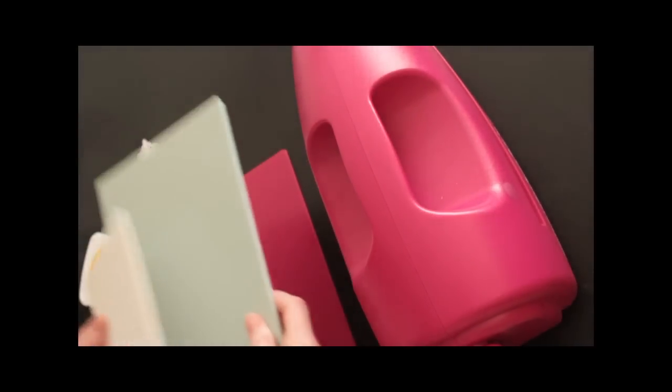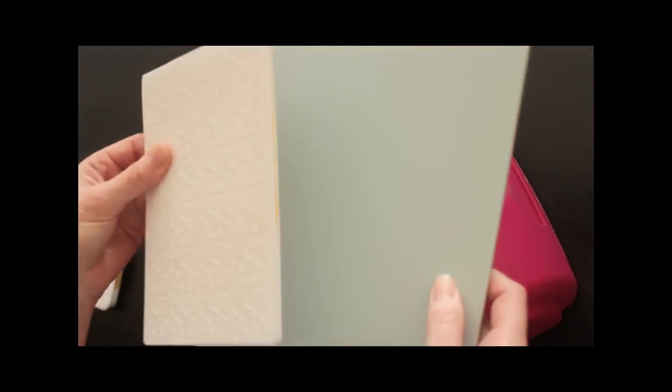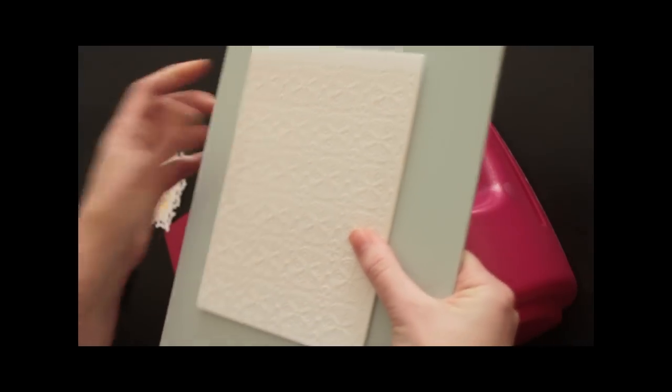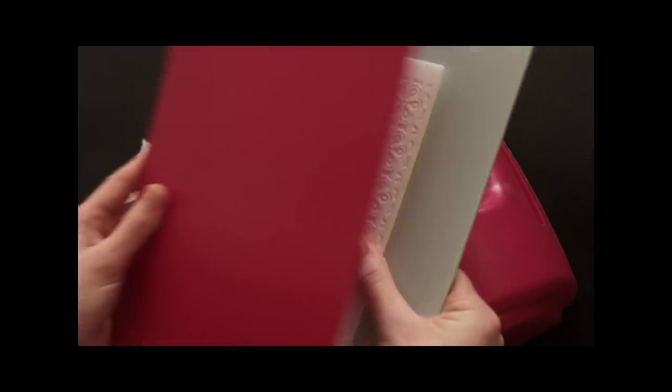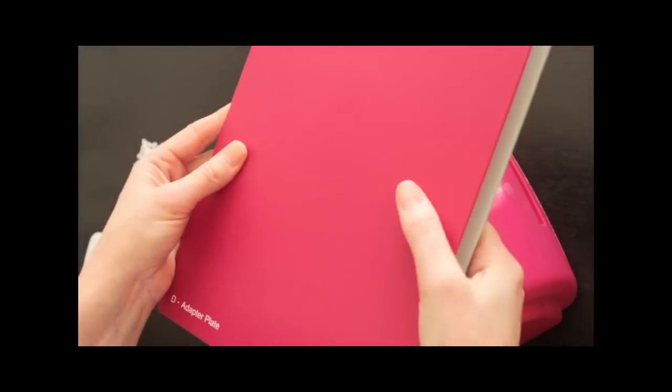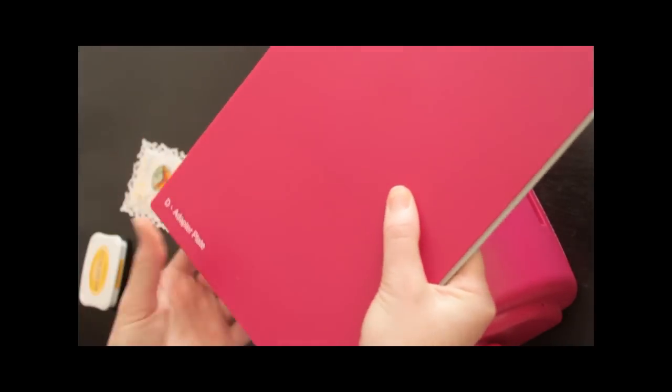To run your folder through the Grand Caliber, you will start with a base plate. Place your EmbossAbilities folder over that and then you will need a pink adapter plate.